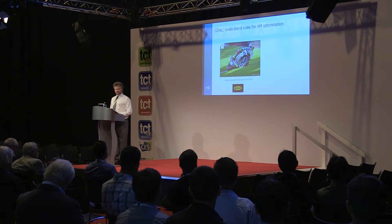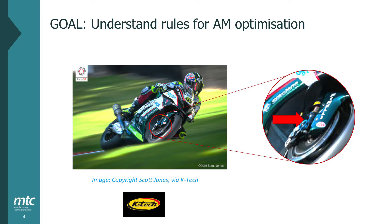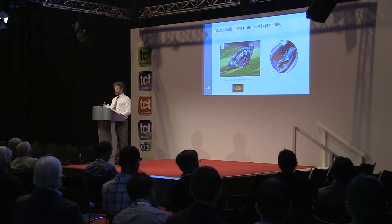The first SME involved in the project was K-Tech, who design and manufacture motorcycle suspension components. Their interest was whether additive manufacturing could produce a part lighter than what could be achieved using another manufacturing process. The component they offered was the bottom of the fork, which holds the front wheel onto the motorbike — small but not insignificant.